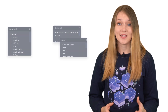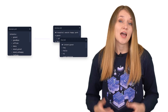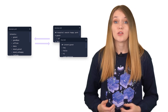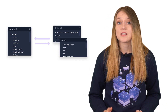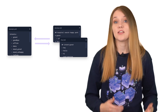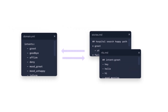As you can see, the domain, NLU training data, and stories data files are quite closely connected. There is no specific rule for which one should come first, but changes in one file will usually result in changes in other files as well. Development of AI systems with RASA usually takes quite a few iterations, and you should expect to constantly go back and forth between these files and make modifications as you go.